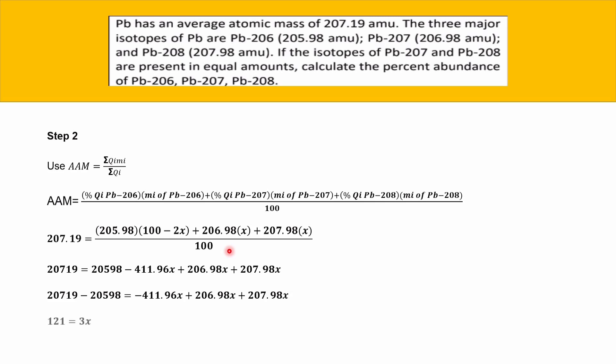Then finally we get 121 = 3x. To find x, we divide 121 by 3, giving x = 40.33. You don't have to put the percent sign right now because we know the value of x, but we haven't given the final answer yet.